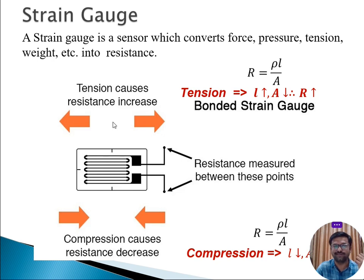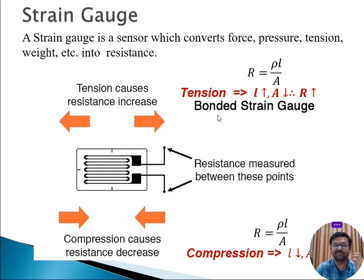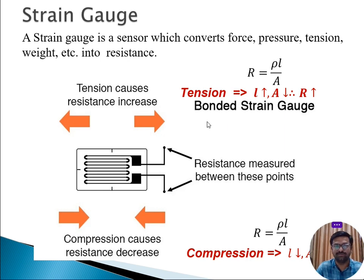There are two types of strain gauges: bounded and unbounded. For our example, we will be considering the bounded strain gauge.